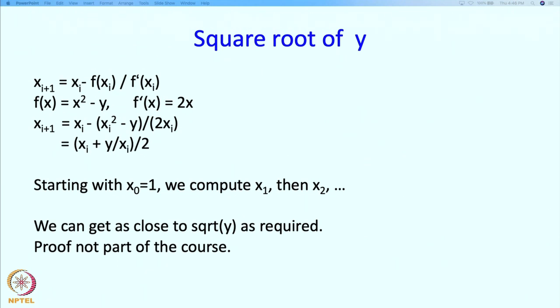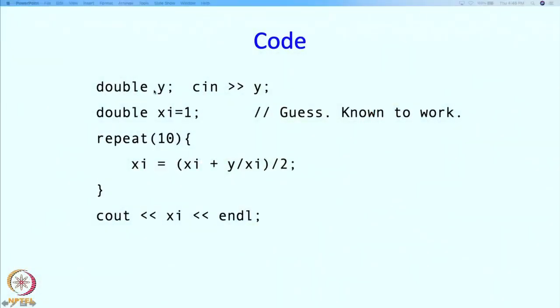The proof that this converges involves a little calculus — first-year calculus of science and engineering should be adequate — but it is not a part of the programming course. The code is very simple: we read y (the value whose square root we want), set xi to 1 as our initial guess, then repeat 10 times: xi = (xi + y/xi)/2, computing the new xi from the old. At the end we print out the result.